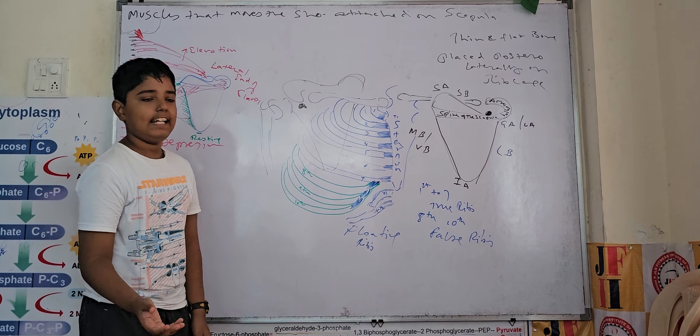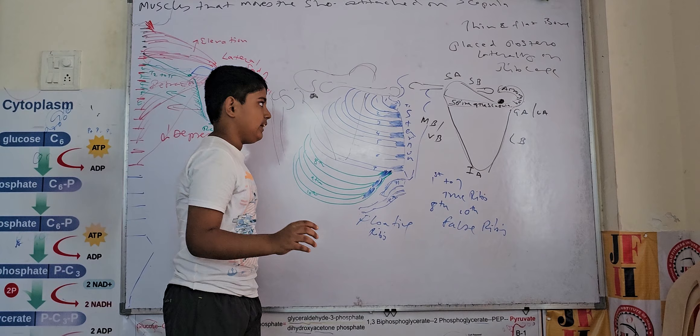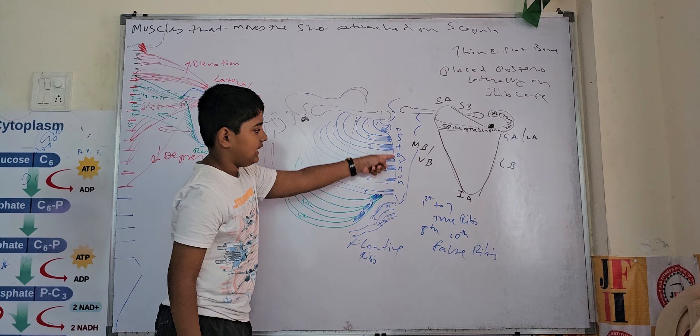Let's understand about ribs. We all know that there are 12 ribs total in our rib cage, and they are divided into 3 parts. The 1st to 7th rib is called true ribs because they are attached to the sternum.